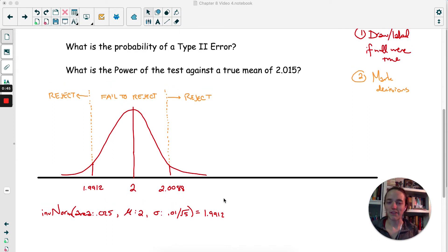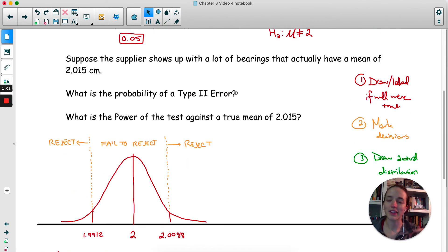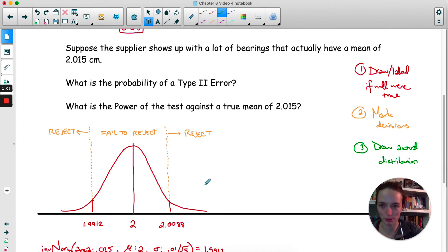But now let's get back to type 2 error. The type 2 error occurs when we fail to reject, but we should have rejected. So the null was actually false. We're sticking with it, but it turns out it was false. So the next thing we're going to do is draw in where the actual distribution is, because remember we're with this problem, the true mean being 2.015, even though in reality we don't actually know what it is for this problem we do. So 2.015 would be somewhere over here. And what we're going to do is just draw very carefully a normal distribution. So there's our actual distribution.